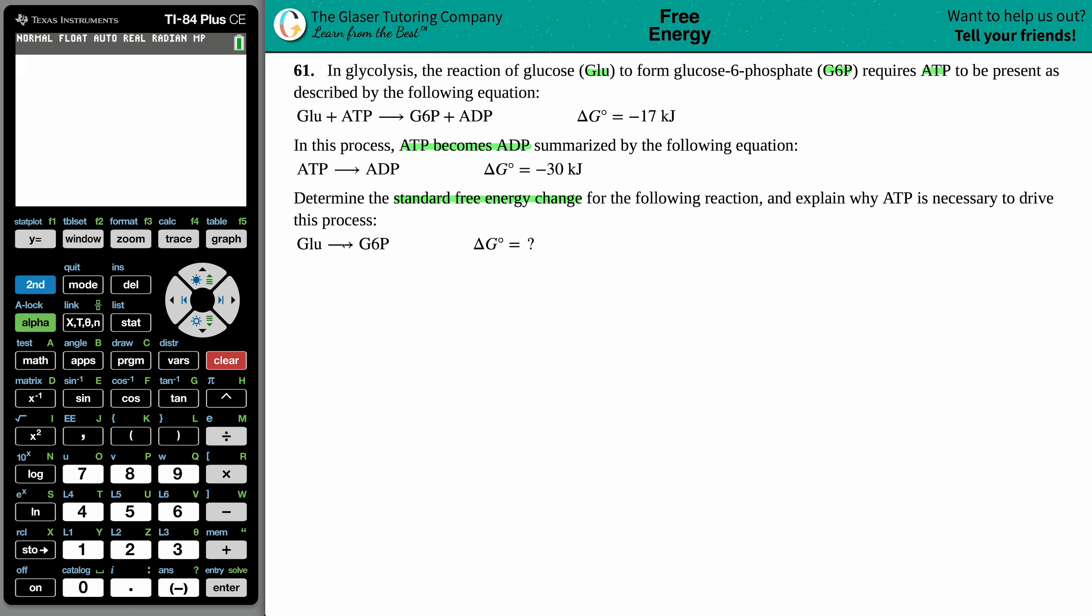So here we go. We need to find out what the delta G is when glucose just turns into glucose-6-phosphate. Okay, so they give me basically two equations with delta G values, so I just have to use these equations to just get what I want. This is kind of like Hess's law, but with delta G.